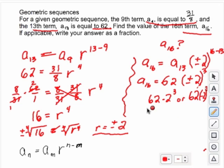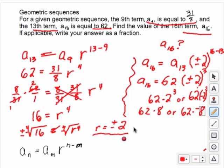So this is going to end up giving us 62 times 8, or 62 times a negative 8. And so that's going to give us 496, or a negative 496.